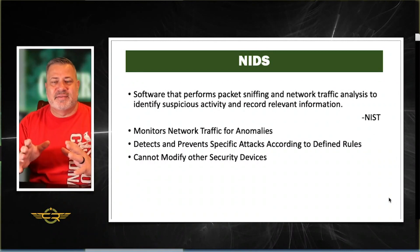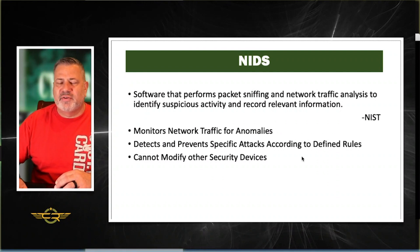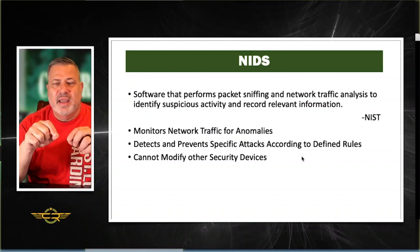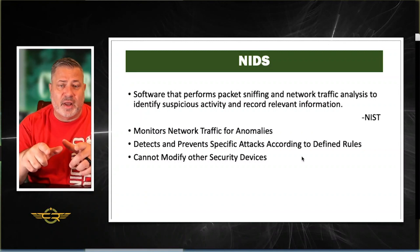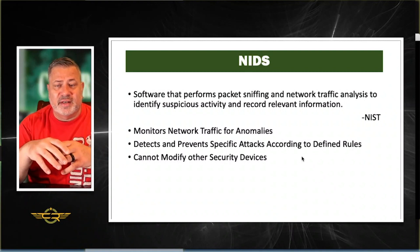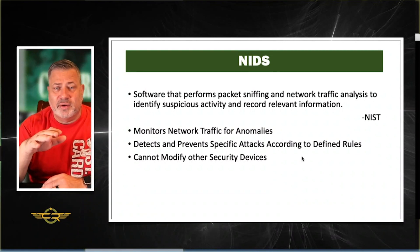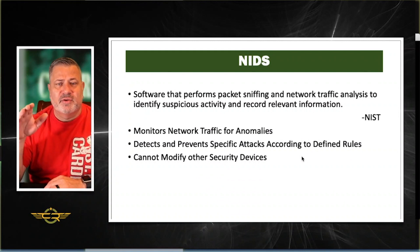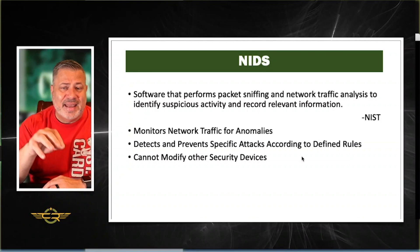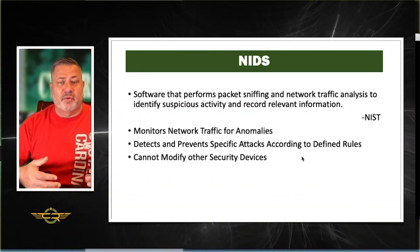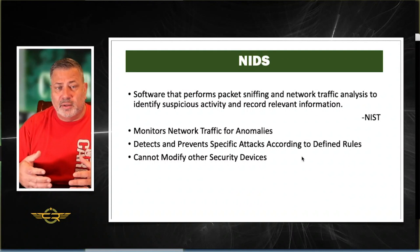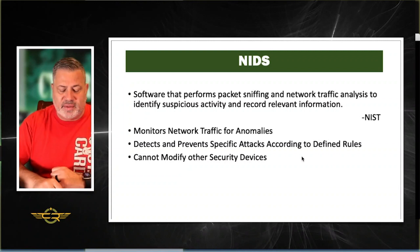A NIDS is software that performs packet sniffing and network traffic analysis to identify suspicious activity and record relevant information. It monitors network traffic for anomalies and detects specific attacks according to defined rules — but it does not prevent them. That's the biggest difference between a NIDS and a NIPS. With prevention, the system actively modifies other security devices like firewalls and routers to block attacks. A NIDS cannot modify other security devices; it just monitors, sends log reports, and sends alerts. A NIPS will also send alerts and log events.